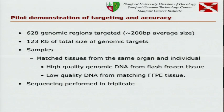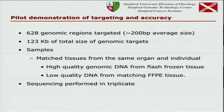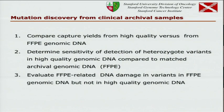For a pilot demonstration, we picked 628 exons from a previous experiment, totaling 123 kb of DNA. We looked at matched samples from normal FFPE tissue versus fresh. There's no tumor here, so theoretically we should get the exact same result. We want to see: number one, what's our efficiency of capture from FFPE versus fresh DNA, and number two, are we seeing false positive calls in the FFPE material due to known DNA damage.